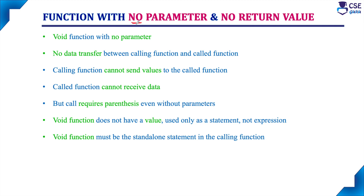Function with no parameter means the calling function is not going to pass any arguments to the called function, and the called function is not going to return any value to the calling function. This is the first category. Since the called function is not going to return a value, we have to use a void function — the return data type is void. There is no data transfer between the calling function and the called function in either direction.